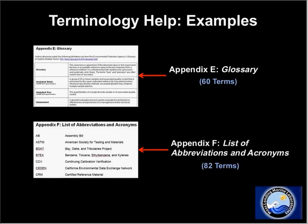The tables contain QA information and analytical information, both of which are notorious for having lots of jargon. So we wanted to provide a couple of tools to help you decipher any jargon you may see in the tables. For example, you may see the term MSD. You're directly linked to a list of abbreviations and acronyms where you'll find out that MSD means matrix spike duplicate. And if you don't know what a matrix spike duplicate is, that's why we also have you linked to SWAMP's glossary. The hope is that between those two tools, everything in the tables will make sense to you.